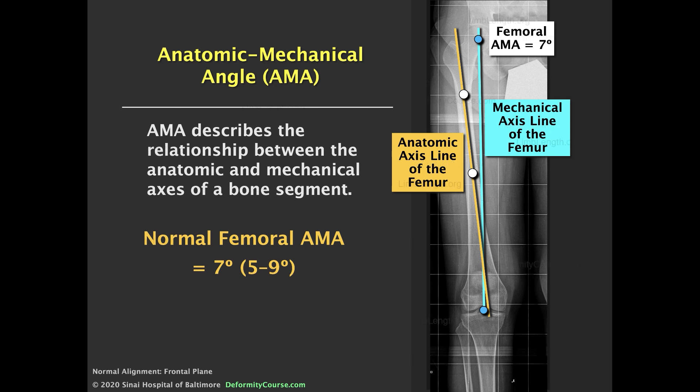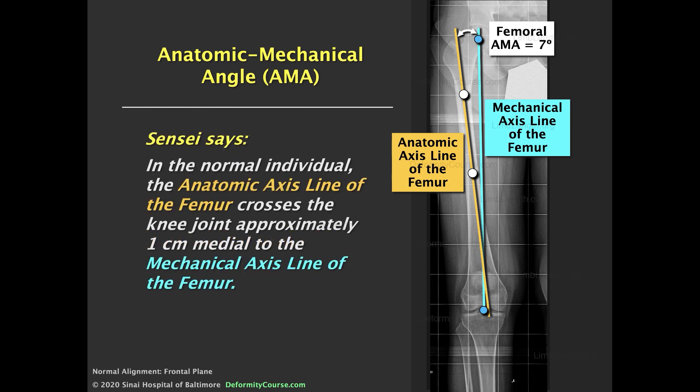The normal anatomic-mechanical axis angle is 7 degrees, and it varies between 5 and 9 degrees depending on stature and several other variables. Typically, the anatomic axis of the femur crosses in the joint about a centimeter medial to the mechanical axis of the femur, just off the medial femoral condyle.